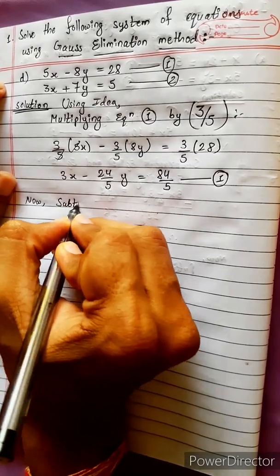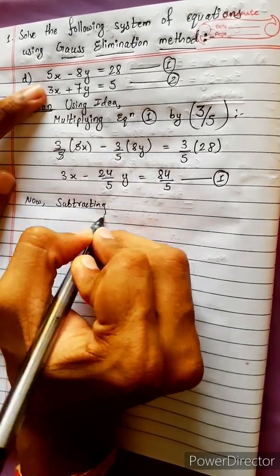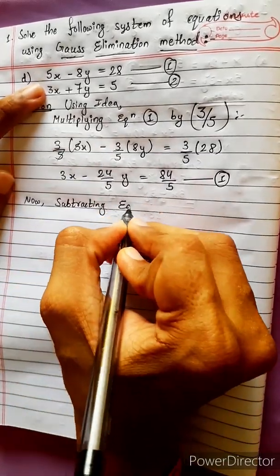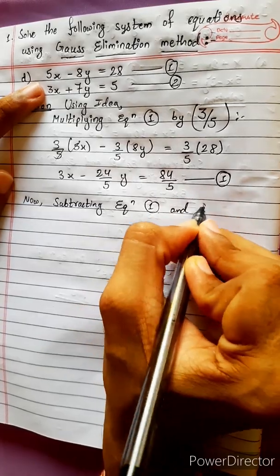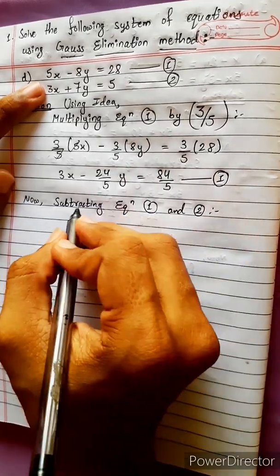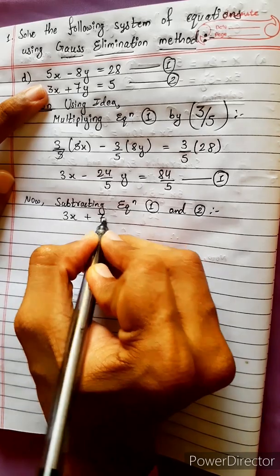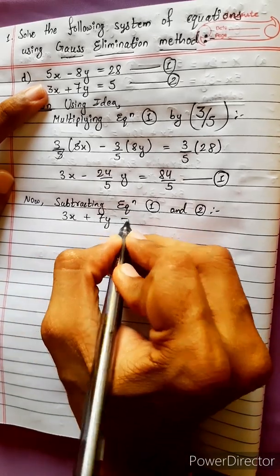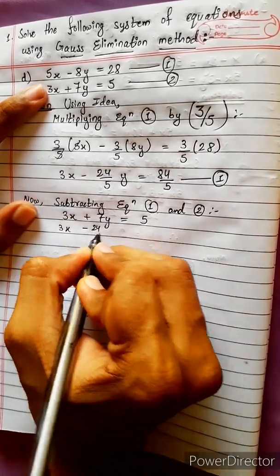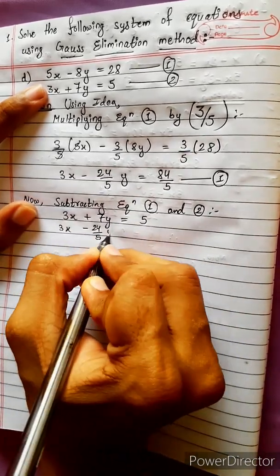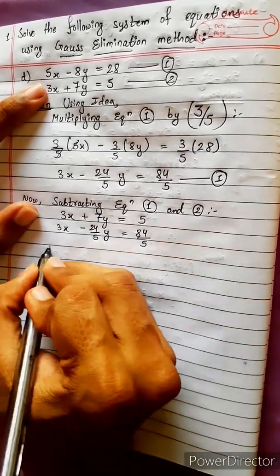Now, subtracting equation 1 and 2, we get: 3x plus 7y equals 5, and 3x minus 24/5 y equals 84/5.